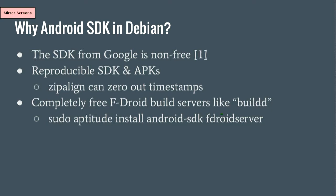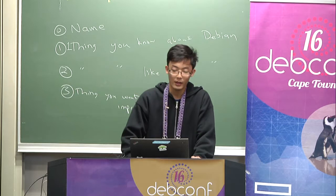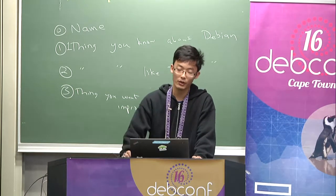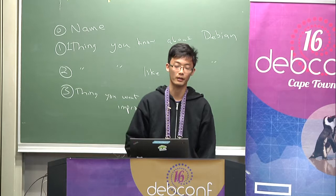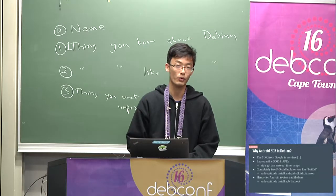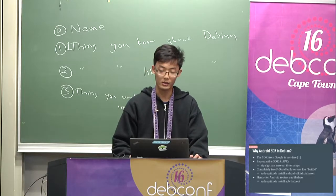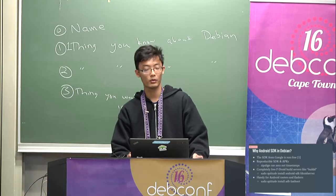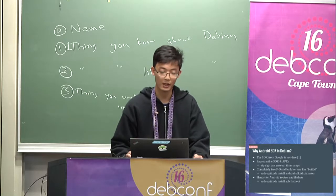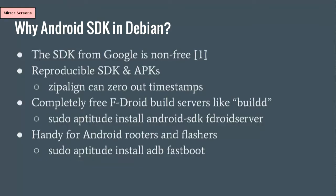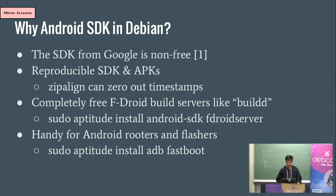It's like Debian is built — you upload the Android source code to the server and it builds for you. And having Android SDK in Debian is also handy if you are going to root your phone or flash your ROMs — you can just install ADB and fastboot. Actually, most people don't need other components in the SDK, they only need ADB and fastboot. And if ADB and fastboot are in Debian, then you can just install these tools without needing to download the entire SDK.